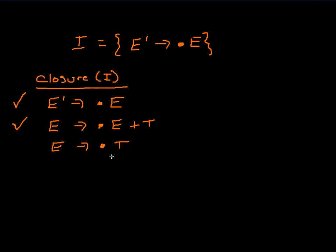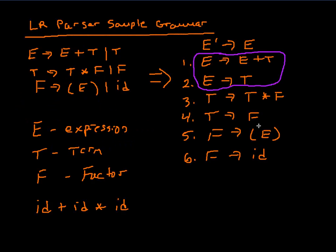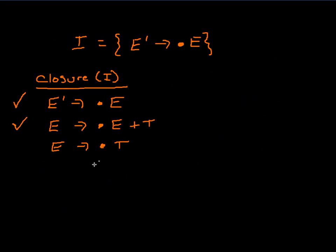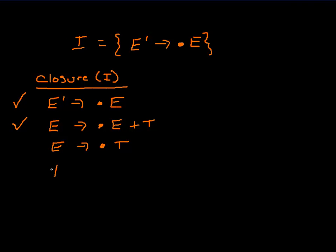Now we apply the rule to E produces dot T. We have a dot immediately in front of the non-terminal T, so we go back to the original grammar and find all the T productions. There are two: we add T produces dot T star F and T produces dot F to the closure of I.